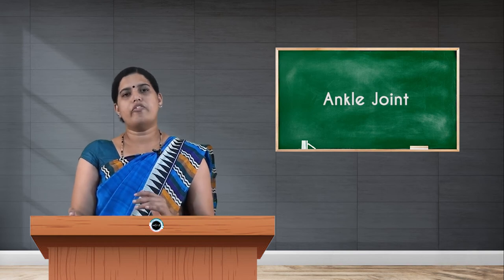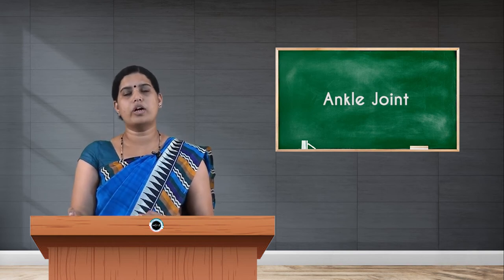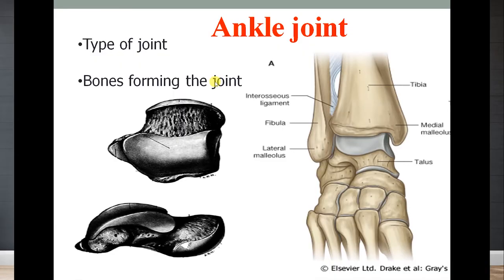When discussing any joint, it follows these criteria: the type of joint, the bones forming the joint, ligaments, relations, movements, the muscles producing the movements, and lastly applied aspects. The ankle joint is homologous to the elbow joint — it is a modified hinge variety of synovial joint.